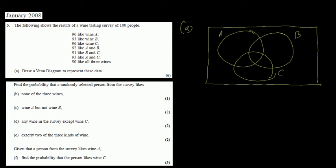The first given value is set A is 96 — this entire circle representing set A is 96. Set B is 93 and set C is 93. All of these values refer to the entire set — you have to remember that.